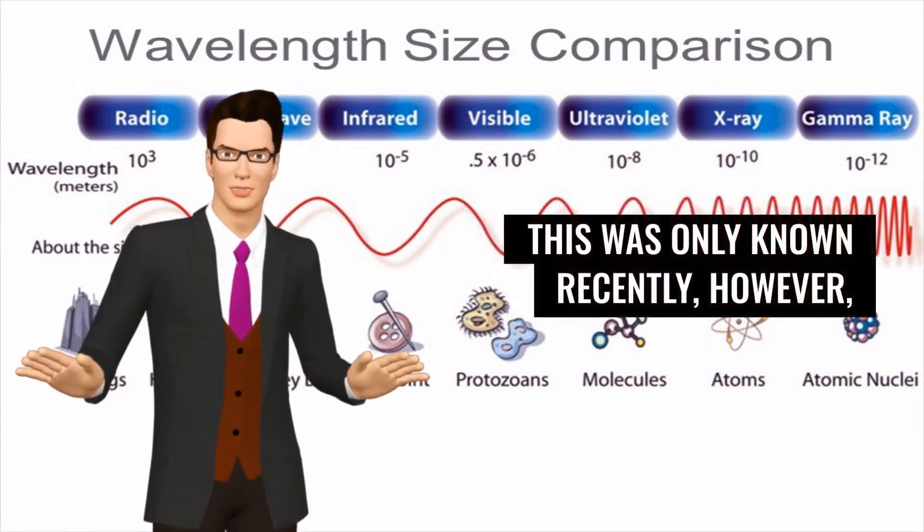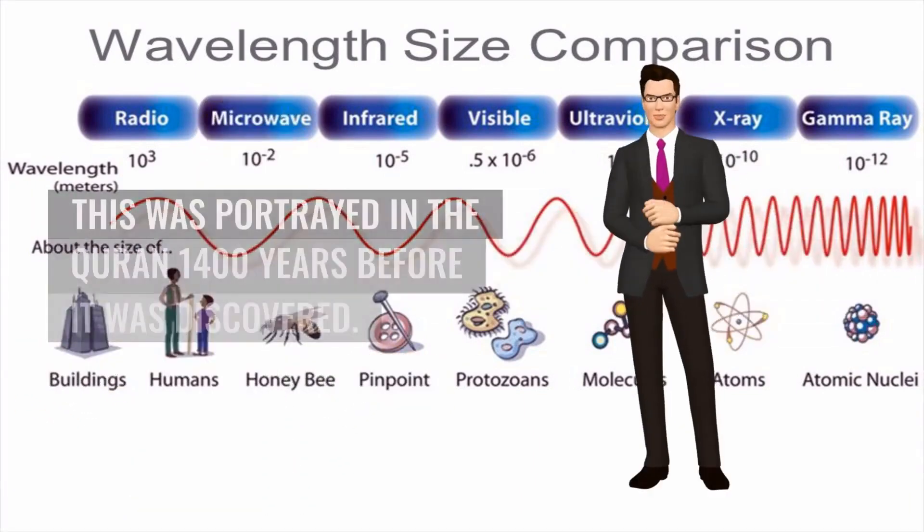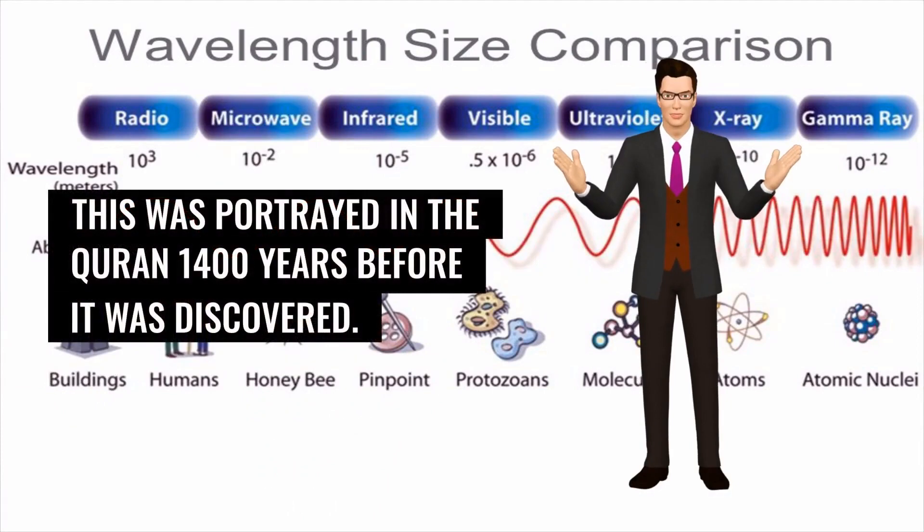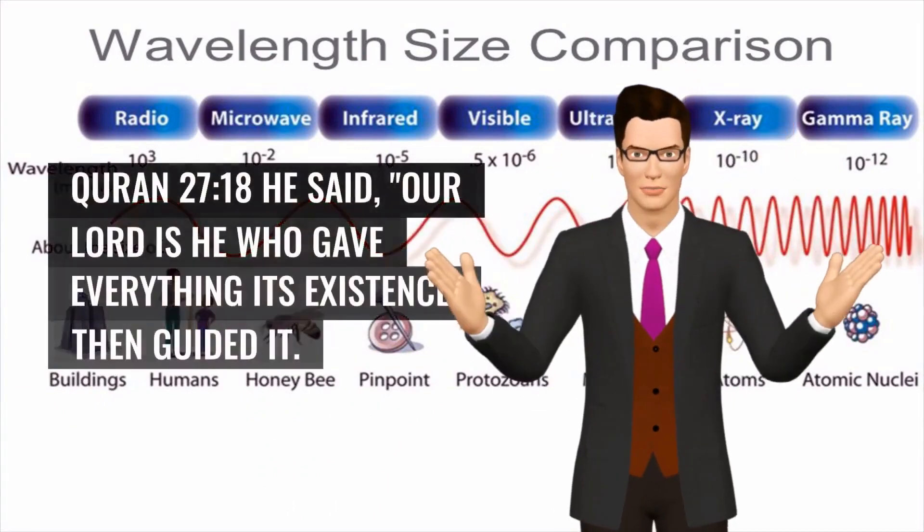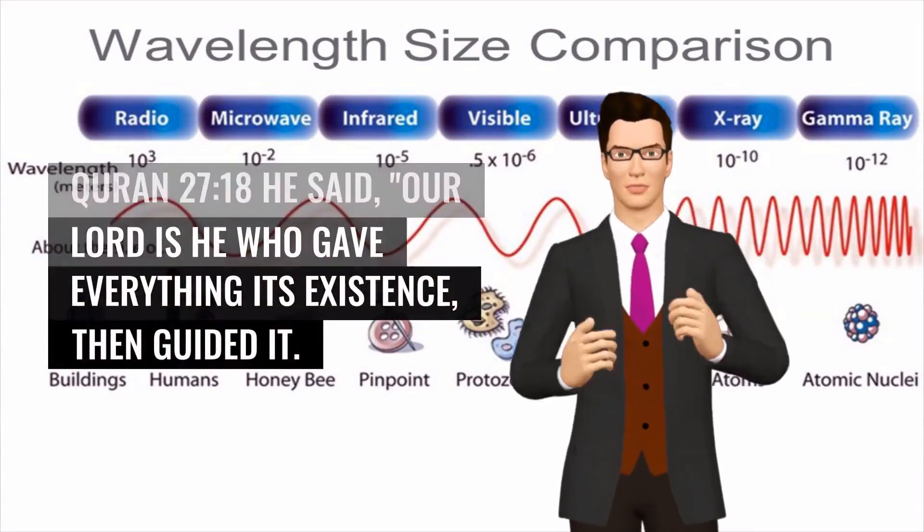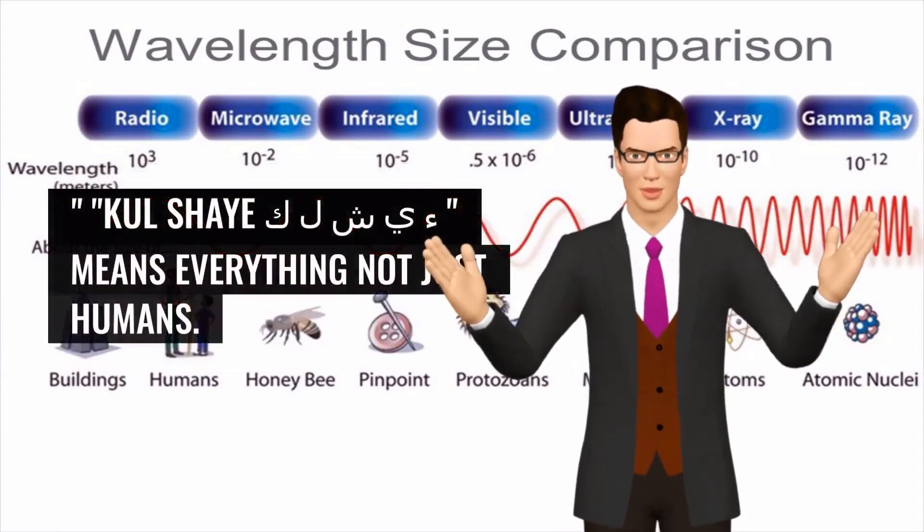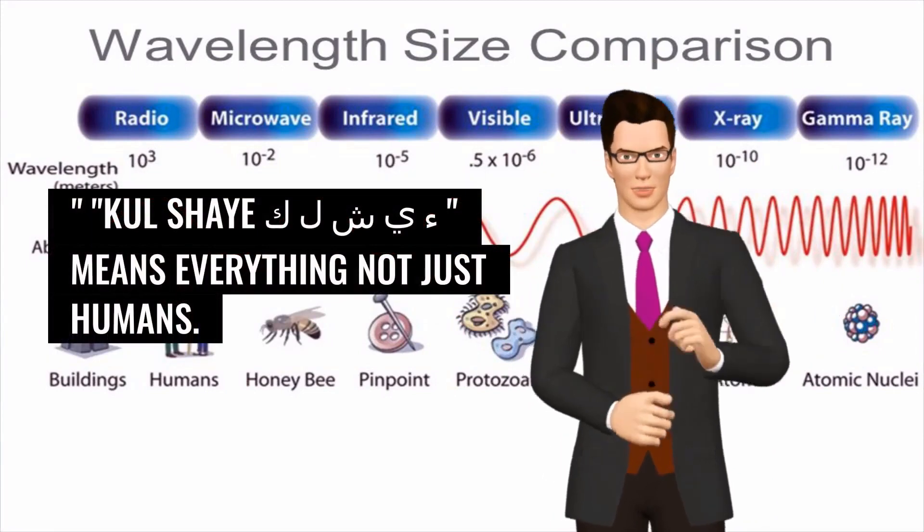This was only known recently, however, this was portrayed in the Quran 1,400 years before it was discovered. Quran 27:18 - He said, 'Our Lord is He who gave everything its existence, then guided it.' Kulshay Koflamsin Yah Hamzat means everything, not just humans.